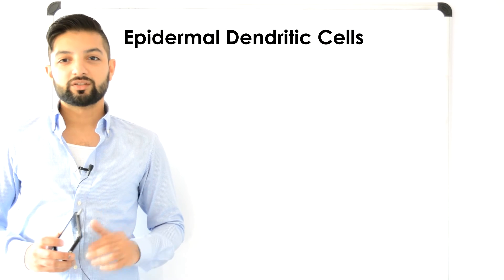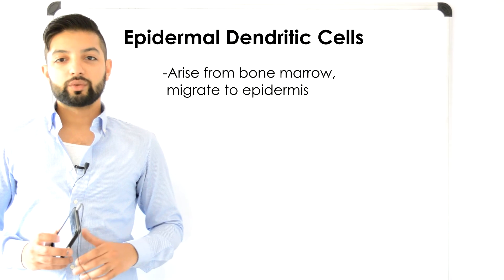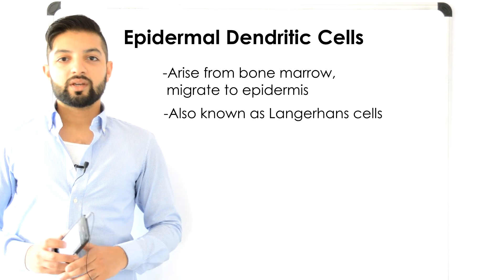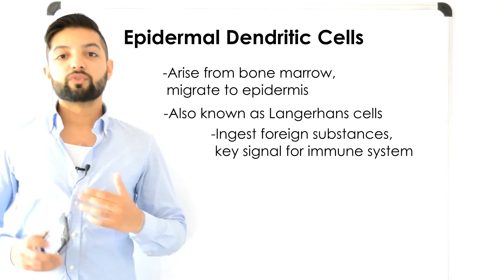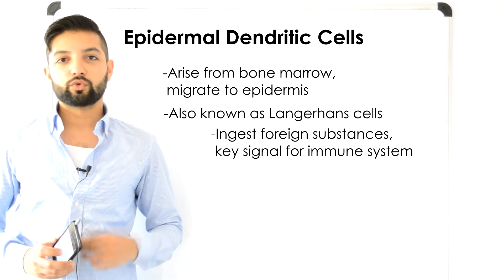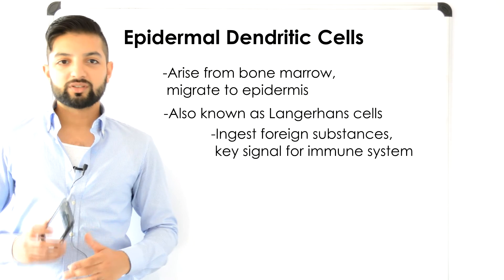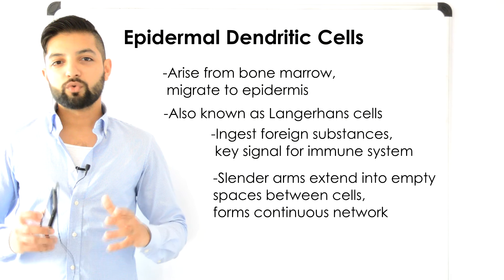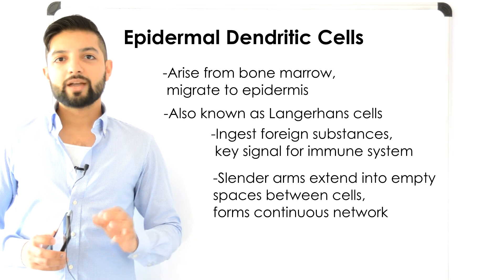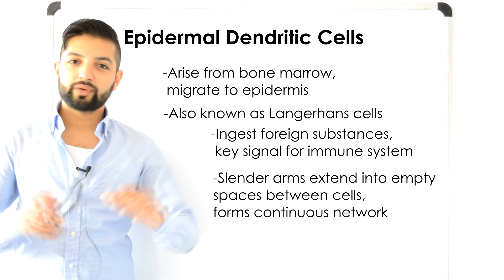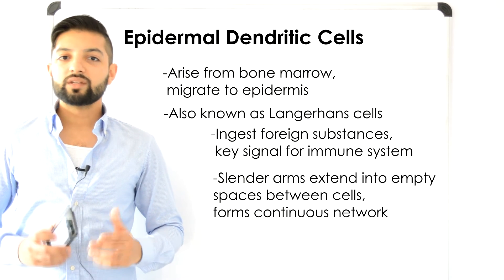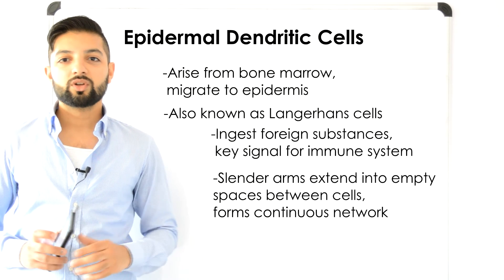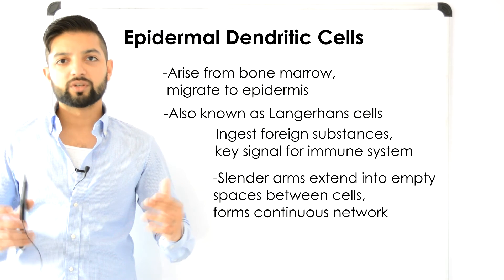The star-shaped epidermal dendritic cells arise from bone marrow and migrate to the epidermis. Another name for these epidermal dendritic cells is Langerhans cells. These Langerhans cells ingest foreign substances, which is a key signal for our immune system. These epidermal dendritic cells have slender processes that extend among the surrounding keratinocytes, forming more or less a continuous network — almost the way water fills a network of creeks in the forest.